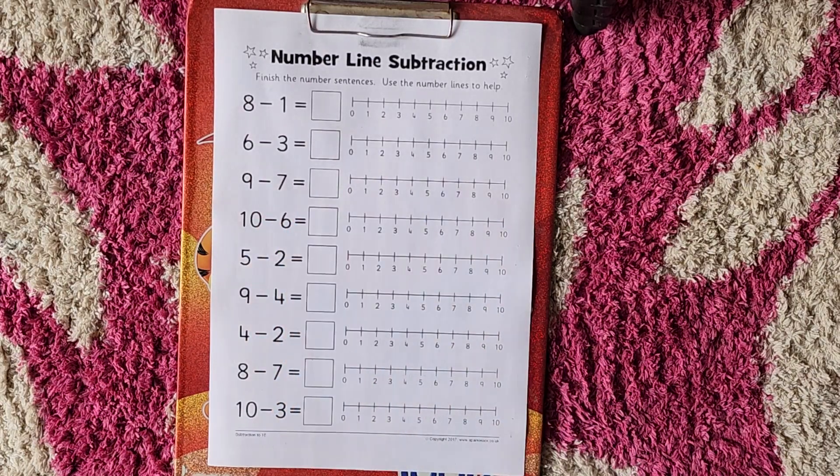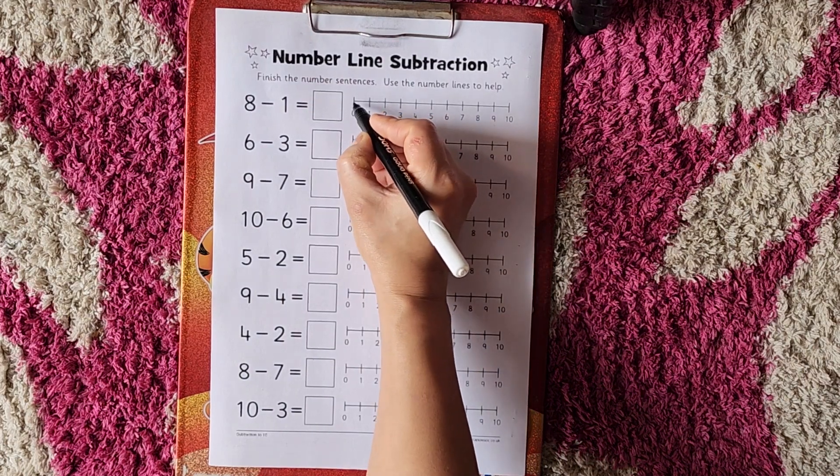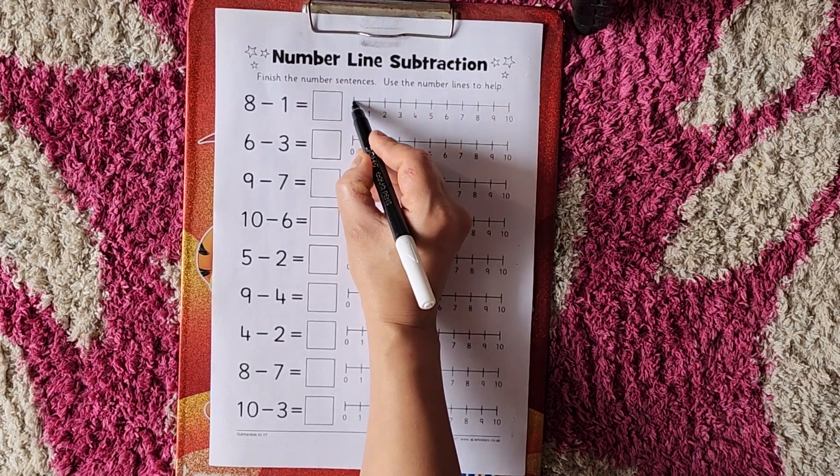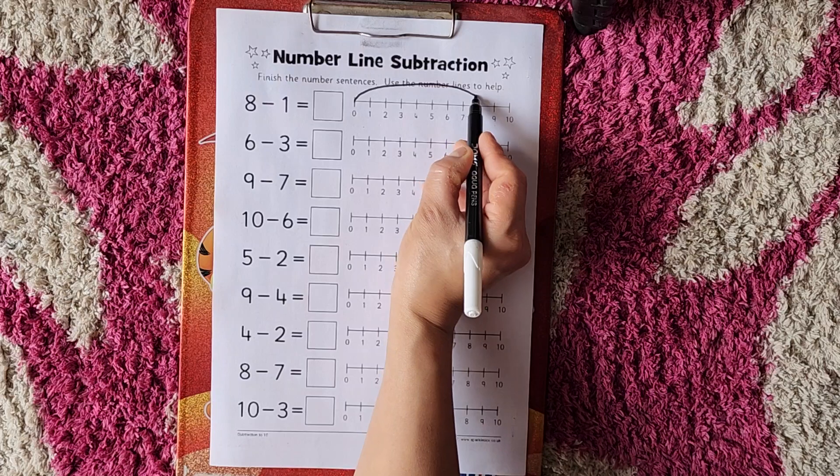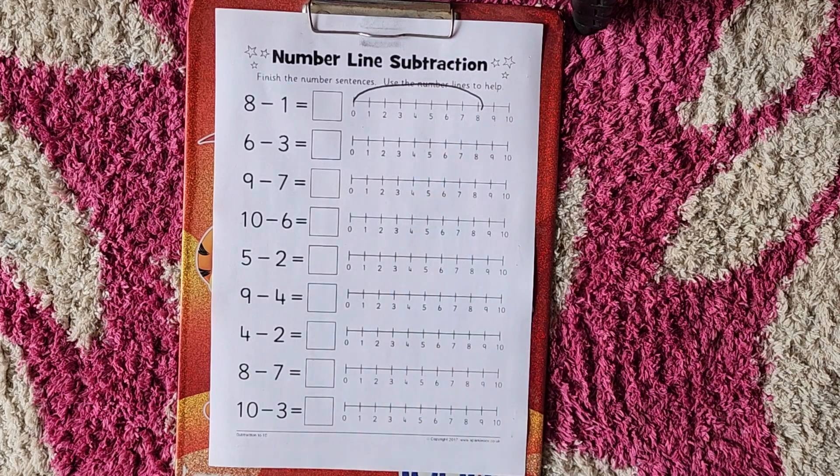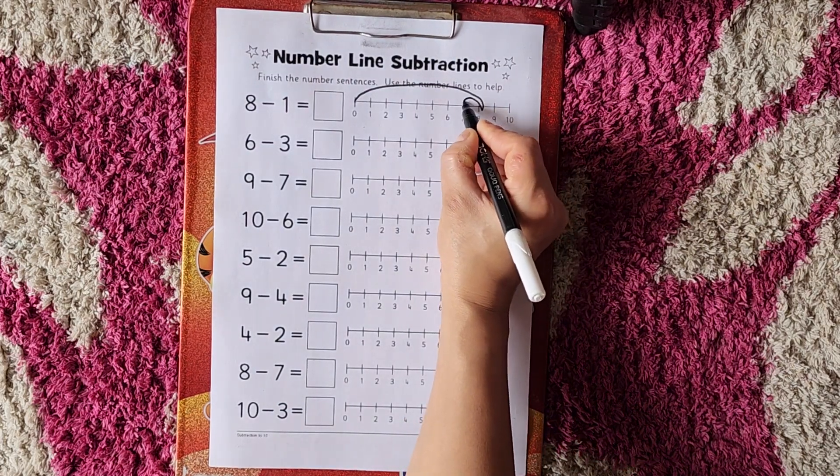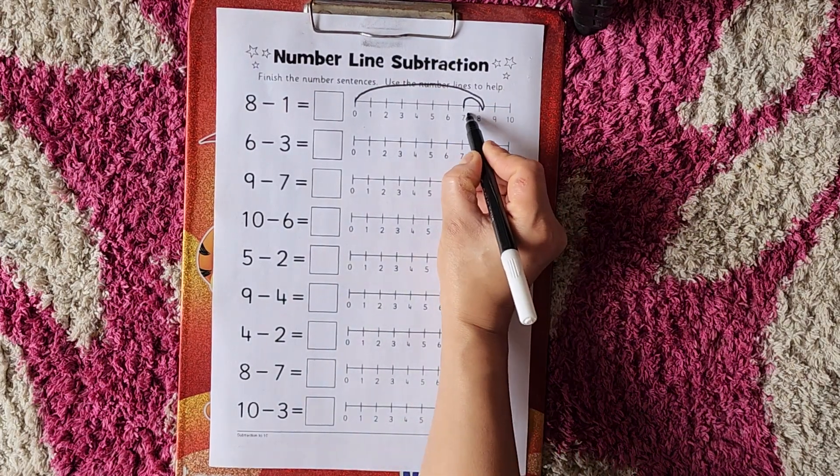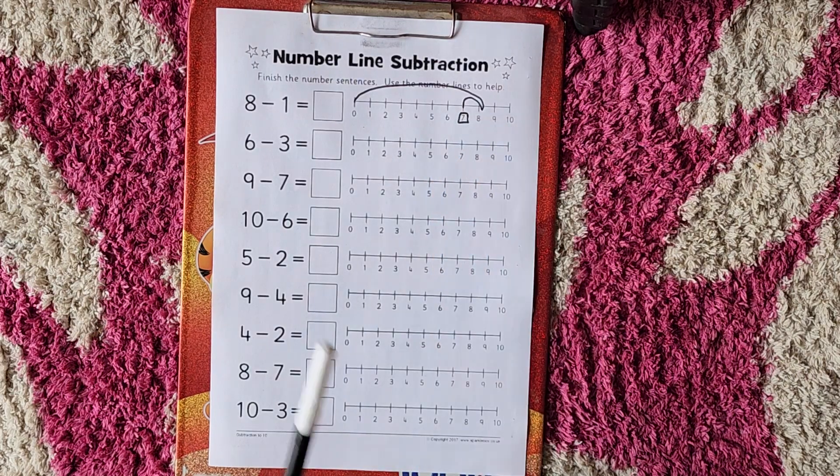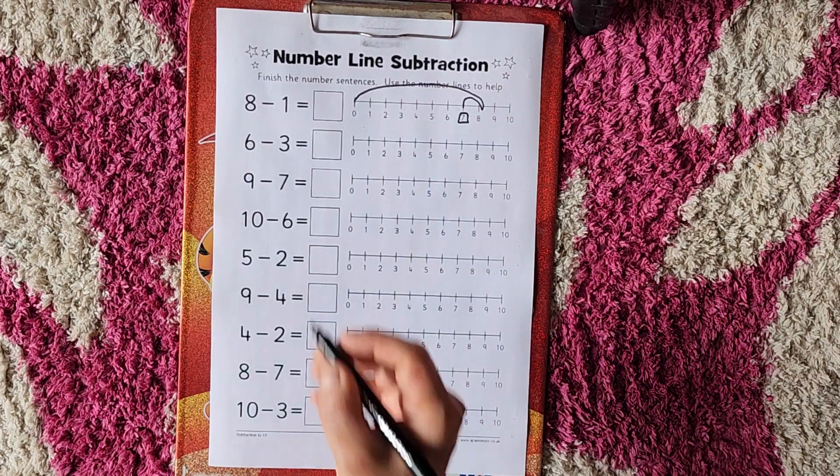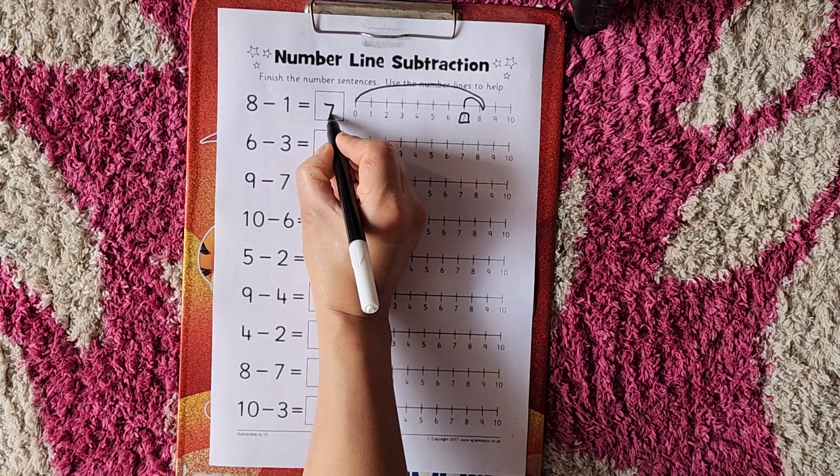First is 8 minus 1. So how are we doing? First of all, put the pencil on 0. Go to 8 number. Now 8 minus 1, we have to subtract 1, so we go backward, right? So we go to 7. So 8 minus 1 equals 7. Yes.